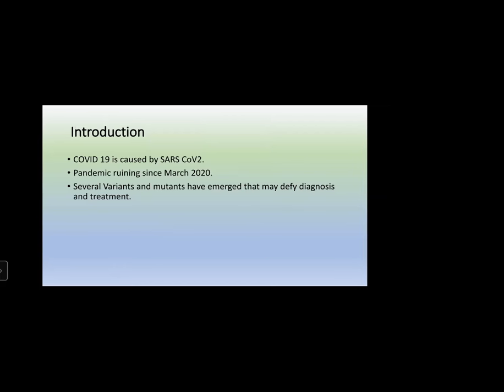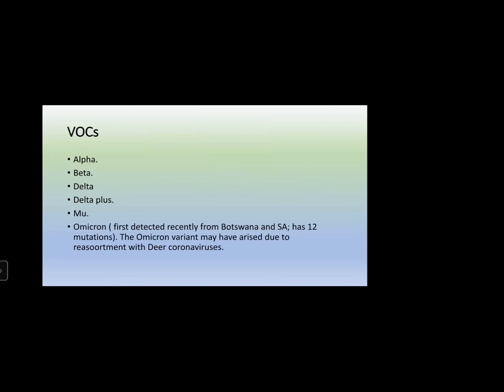Diagnosis rests upon detecting the spike protein, but some mutations in the spike protein do not allow proper diagnosis and treatment. Several VOCs — variants of concern — have emerged like Alpha, Beta, Delta, Delta Plus, and Mu. Very recently, the Omicron variant has emerged. One month or 15 days back, the most common VOC was Delta or Delta Plus, but now Omicron is emerging and probably within a few weeks it may become the dominant variant everywhere.